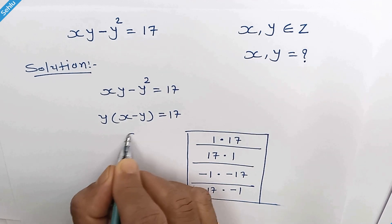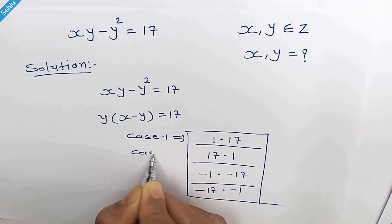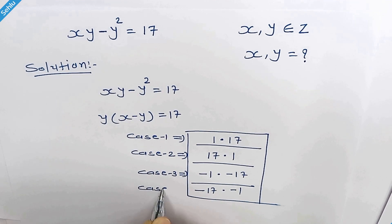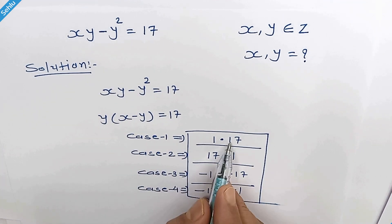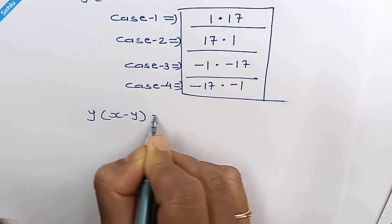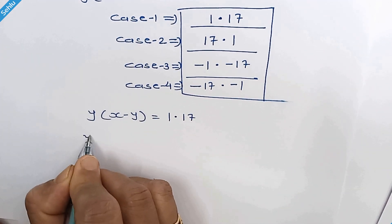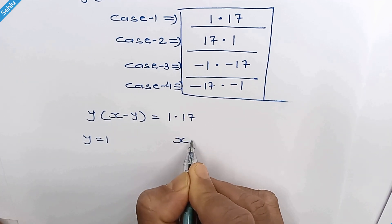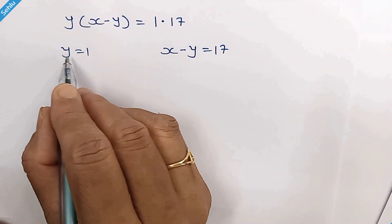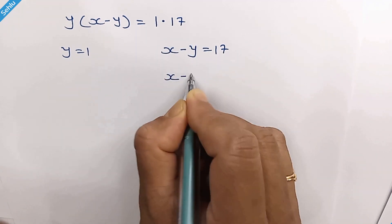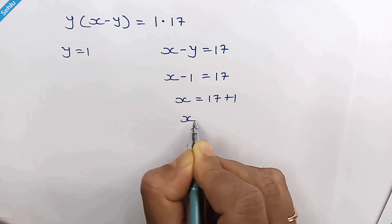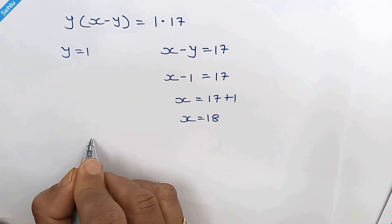Let's call them Case 1, Case 2, Case 3, and Case 4. For Case 1: y times (x minus y) equals 1 times 17. Comparing, y equals 1 and x minus y equals 17. Substituting y equals 1 gives x minus 1 equals 17, so x equals 18.